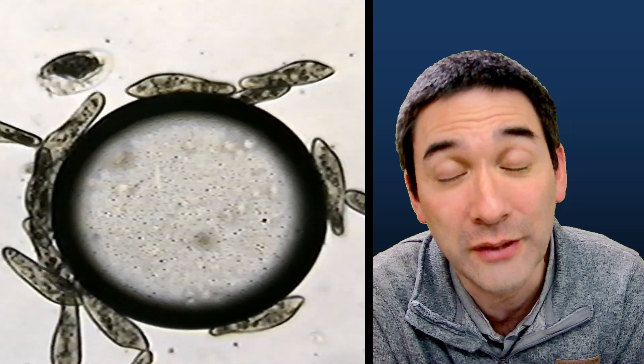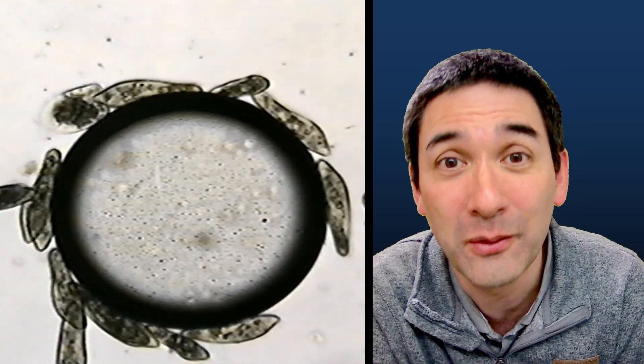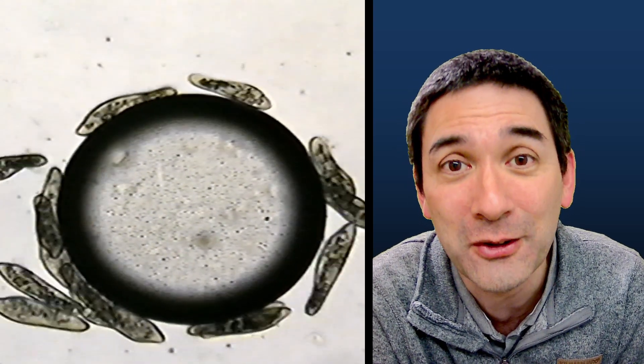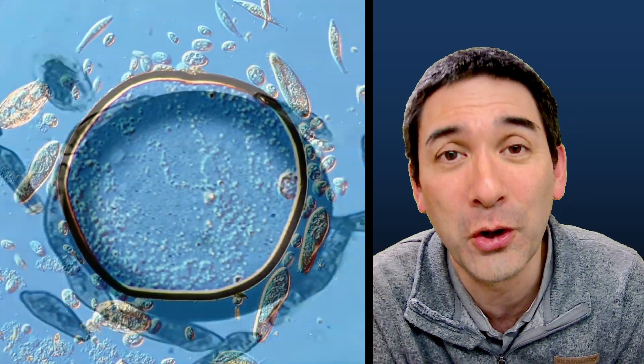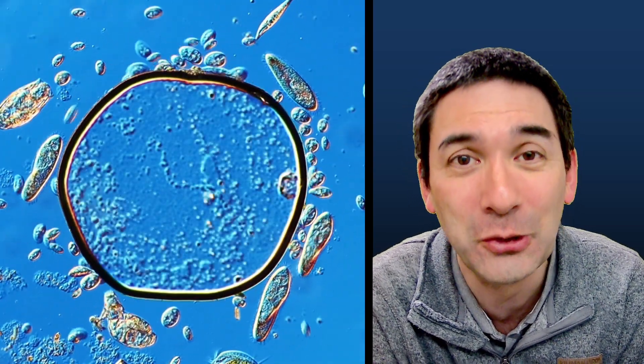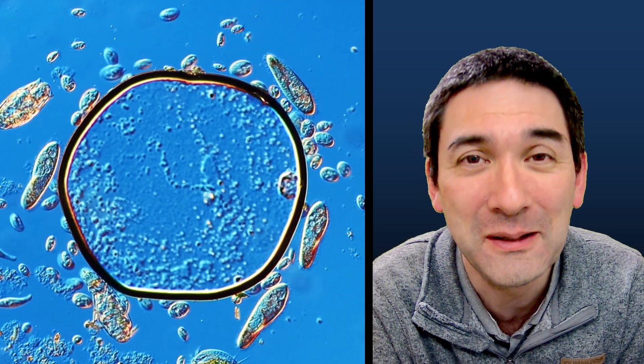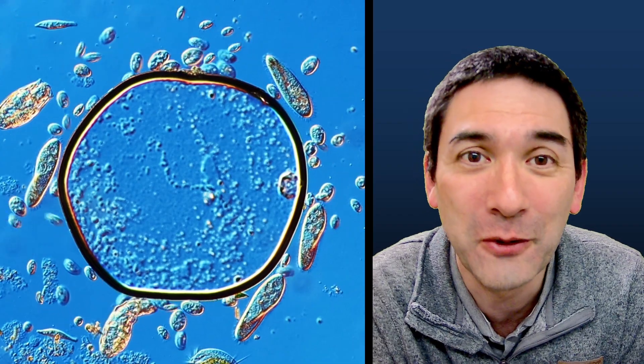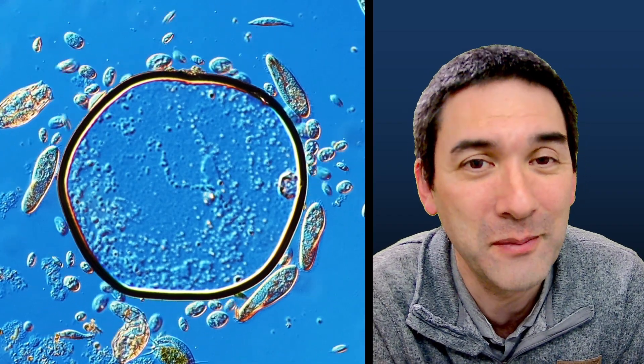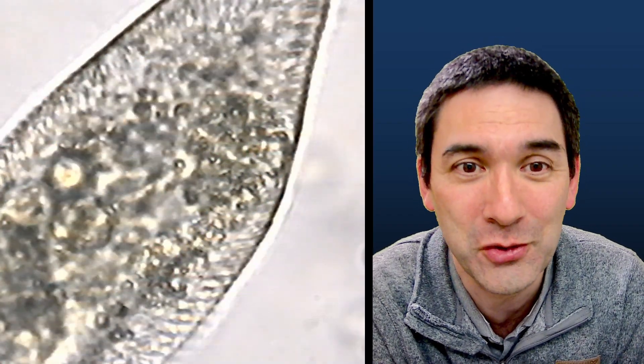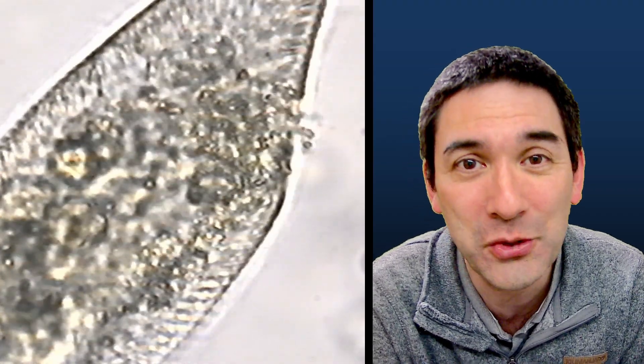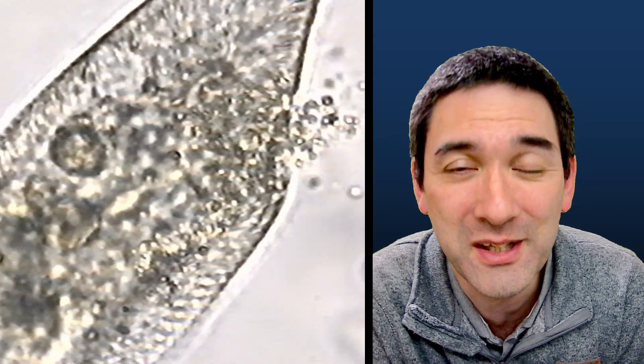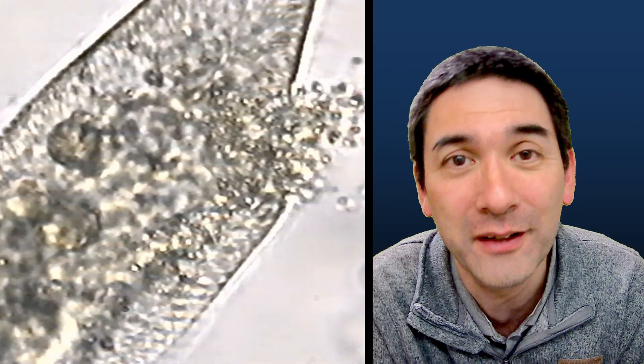In the meantime, almost 23 years later, of course our microscopy hardware has improved quite a bit and this is how it looks using modern equipment. Still, some things do not change. Again, here we've got those little microbes gathering around the air bubble under the microscope slide, and this one over here is a close-up of one of those cells actually expelling some of the undigested material.